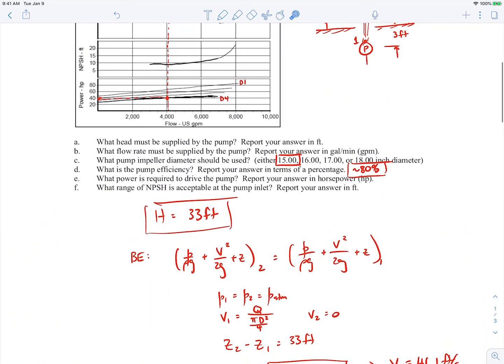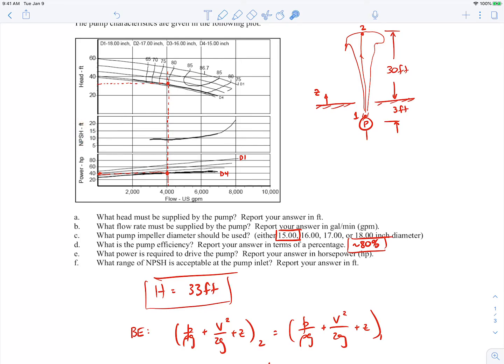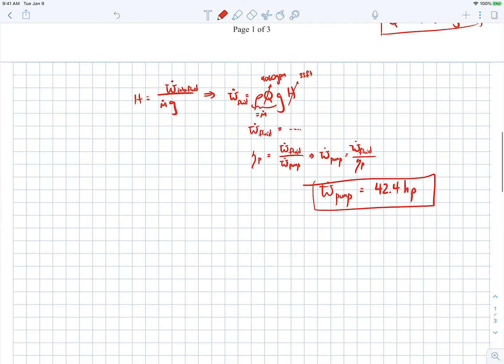Now the last part of the problem is to find what range of NPSH is acceptable at the pump inlet. So to do that, again we come to the plot and we'll go to the NPSH curve. This curve is actually the NPSH R, it's the net positive suction head required by this pump. So we see for our flow rate, looks like our NPSH R is about nine feet. So what we need is our NPSH A to be greater than or equal to the NPSH R, and then NPSH R, we just said, was about nine feet.